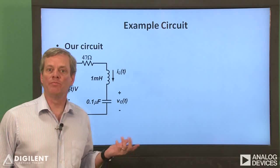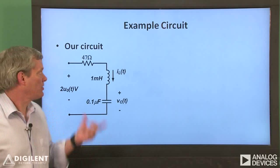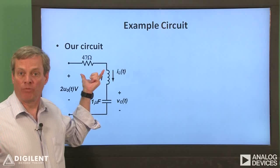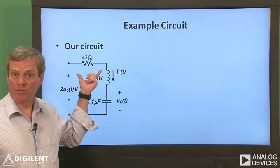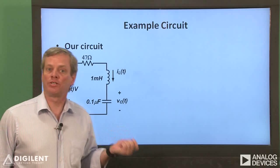We'll use channel one of our oscilloscope to measure the capacitor voltage, and channel two of our oscilloscope will measure the voltage across the resistor. We'll use a math channel in conjunction with this resistor voltage to infer the inductor current.